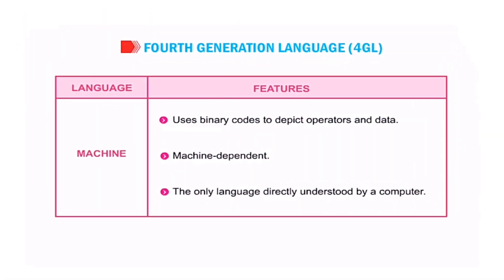Let's quickly go through the computer languages we've discussed. The first is machine language: it uses binary codes to depict operators and data. It is machine dependent and is the only language directly understood by a computer.